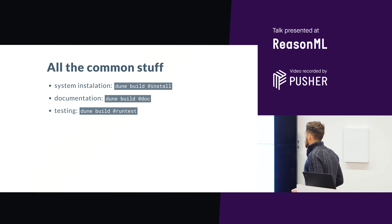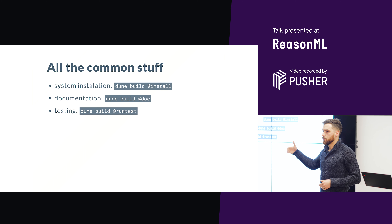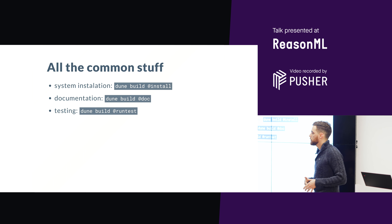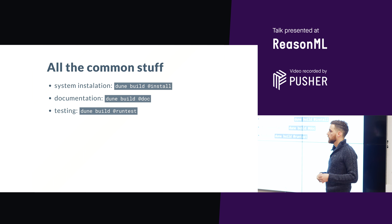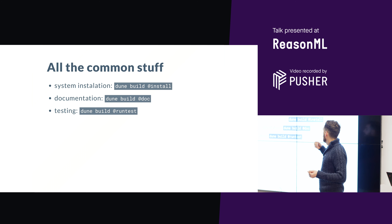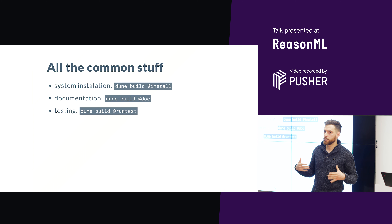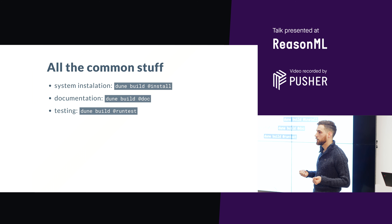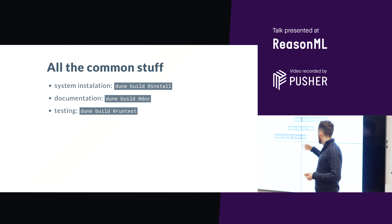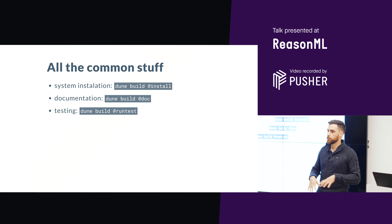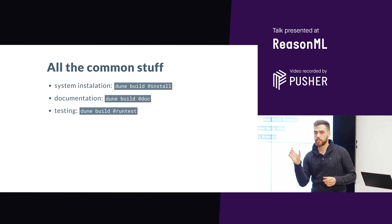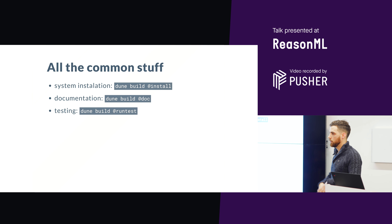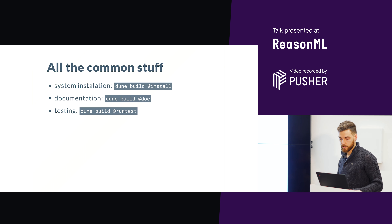Dune supports all the common stuff. When you develop native applications you want to install them on your system, so you can ask Dune to build everything you want to install, to build your API documentation and generated HTML documentation, or to run tests. There is the concept of an alias in Dune — it means something general, not just a single program, but a generic high-level order.